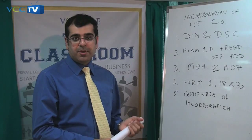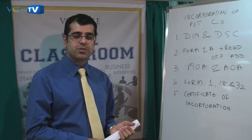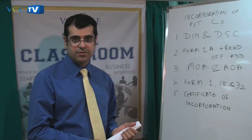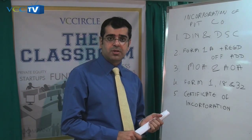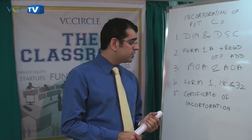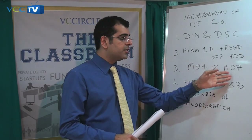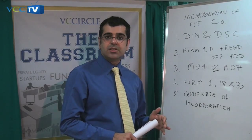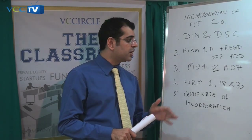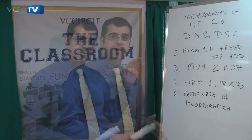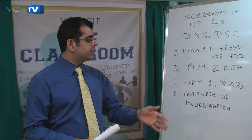While the applicant is awaiting name approval under Form 1A, one can start drafting the Memorandum of Association and the Articles of Association. The Memorandum of Association is the charter document which sets out the objects of the company and the activities it would carry out. The Articles of Association governs the internal management and administration of the company. Once the name is approved, one is required to file Form 1, 18, and 32.